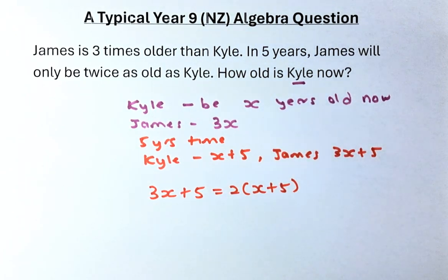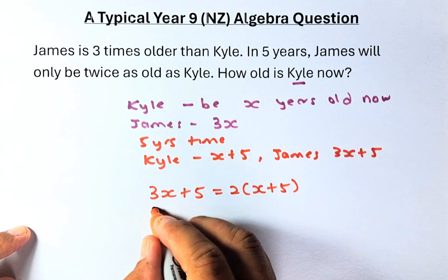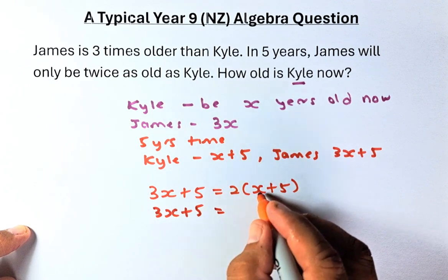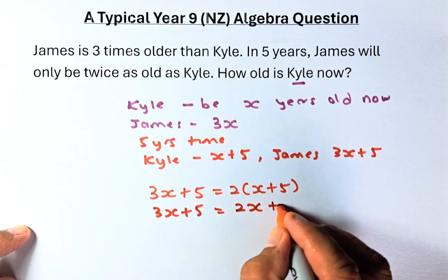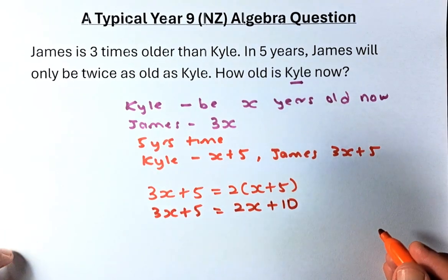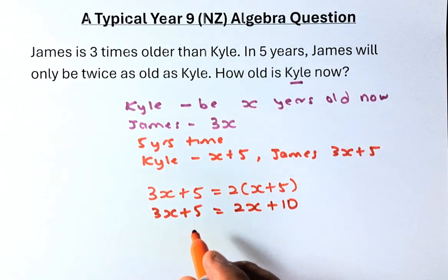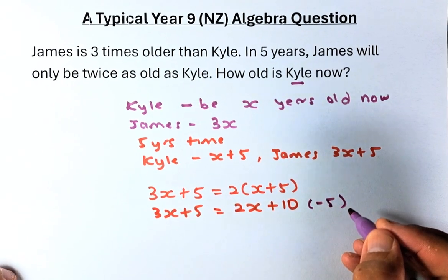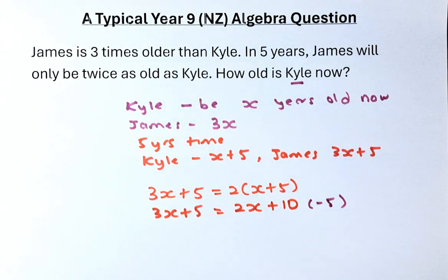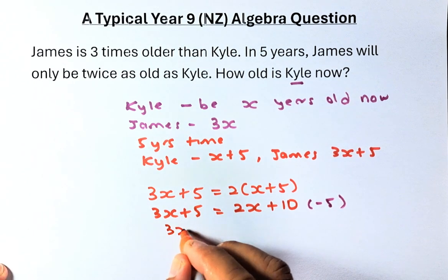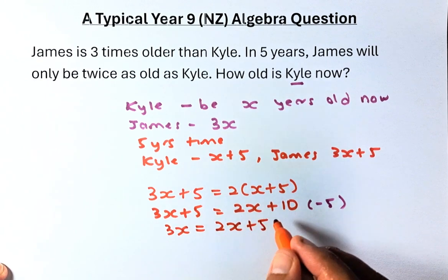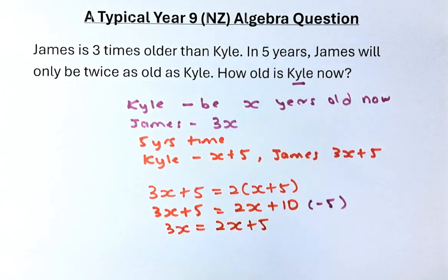To solve this, we are going to use expanding. On the left hand side we have 3X plus 5. On the right hand side, you expand, and it becomes 2X plus 10. Now we get rid of the 5 by taking away 5 from both sides, so the equation becomes 3X equals 2X plus 5, because 10 minus 5 gives us 5.